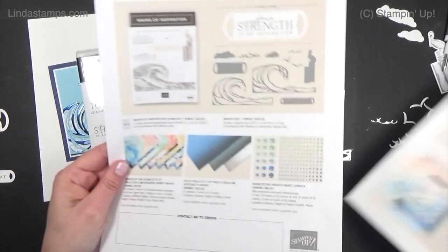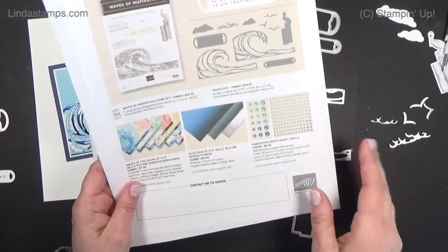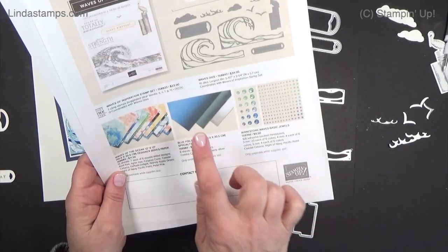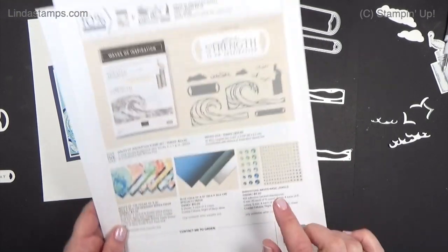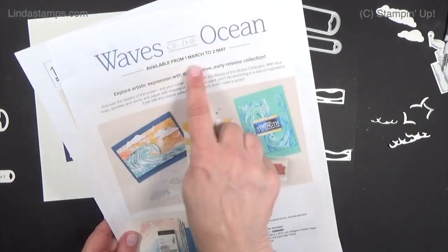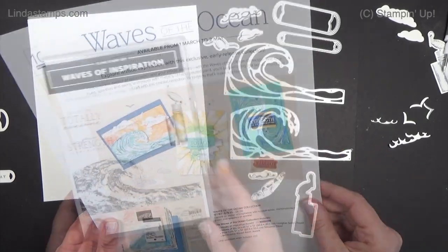There are accessories that are while supplies last, so they will not be in the new catalog. We've got designer paper and foils and rhinestones. I'll show you what those look like in person.